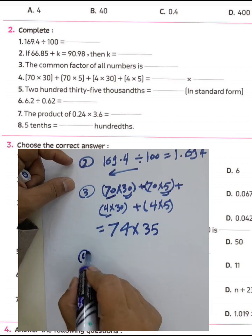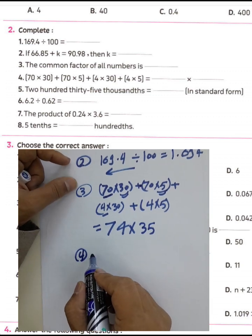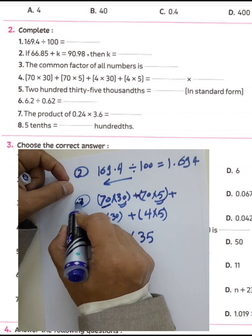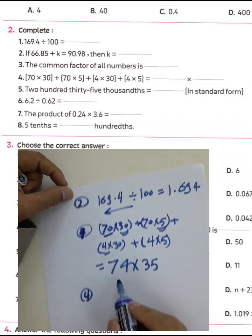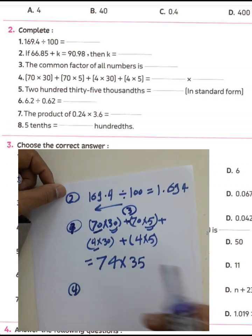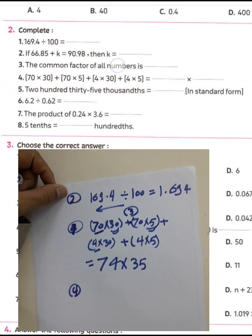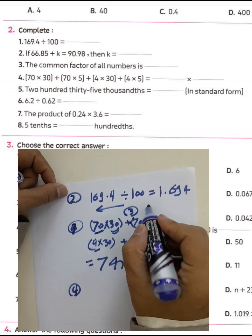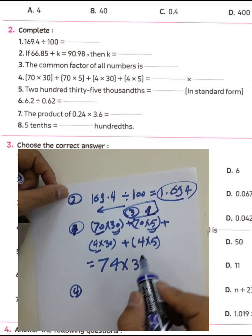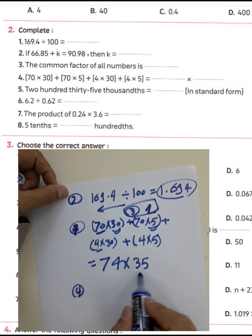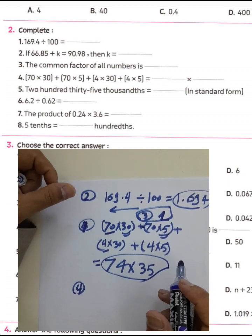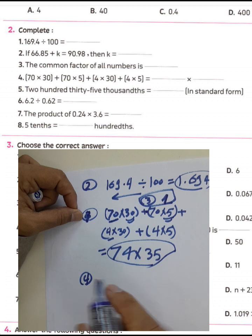Question number four and question number three: the common factor of all numbers is 1, because any number can be divided by 1. This is the result for questions two, three, and four.